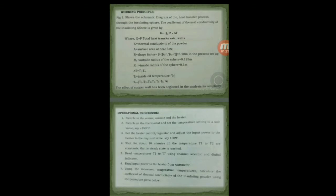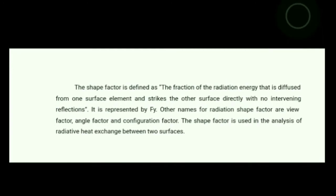The interesting term used here is the shape factor. It is an important factor, which is given by the equation 4 pi r0 ri divided by r0 minus ri. Where r0 is the outside radius of the sphere, that is 0.125 meters, and ri is the inside radius of the sphere, that is 0.1 meters. Substituting in the shape factor equation, we get 6.28 meters in the present setup. The shape factor is a fraction of the radiation energy that is diffused from one surface element and strikes the other surface directly with no intervening reflections. The other names of this shape factor are view factor, angle factor, and configuration factor.